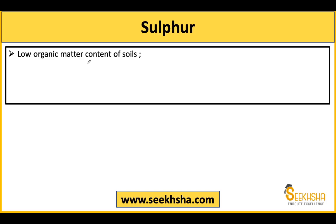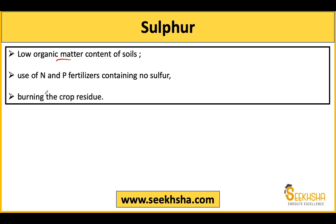For sulfur deficiency in soil: if the organic matter content is low, and if you are using nitrogen- and phosphorus-based fertilizers which contain no sulfur, then sulfur deficiency will occur. Crop residue burning also promotes sulfur deficiency.